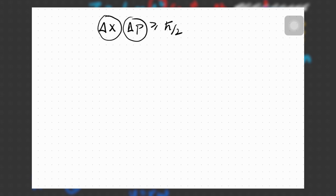We'll start by considering our Lagrangian, which consists of total energy — the potential energy and the kinetic energy. You can put a plus or minus sign; it's a matter of convention. I'm going to say that this Lagrangian is a function of two things: one being my generalized coordinates, and one being the derivatives of these generalized coordinates.